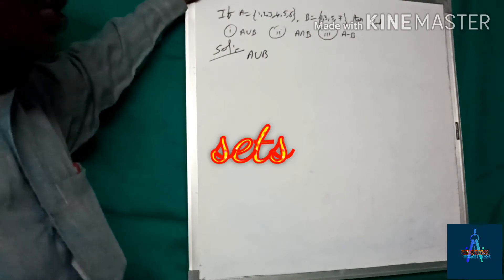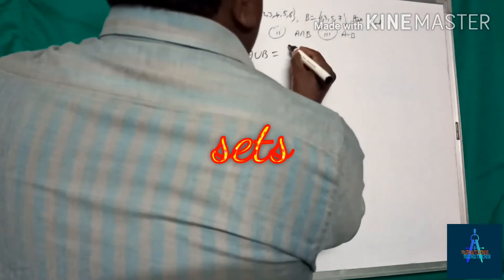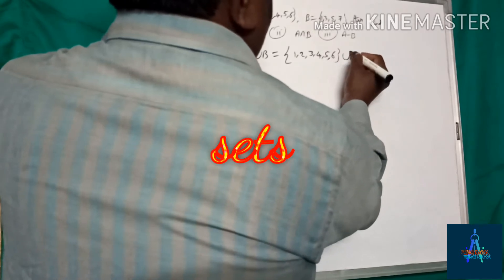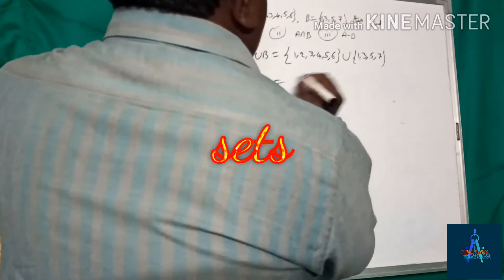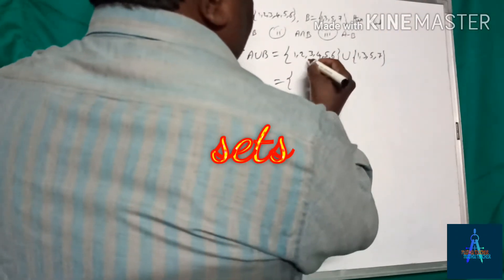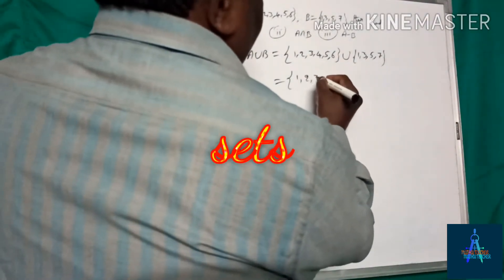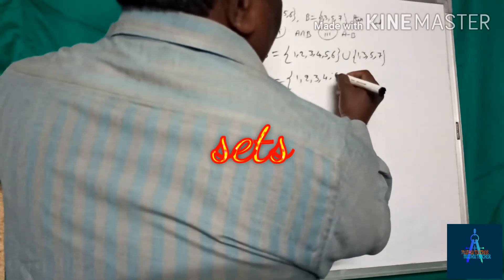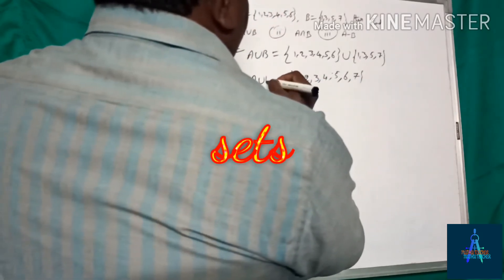Union means combination of both the elements from A and B. So A is {1, 2, 3, 4, 5, 6} union B is {1, 3, 5, 7}. We have to write all the elements from A and B. If you have a duplicate, you write it only once. That gives us 1, 2, 3, 4, 5, 6, 7.